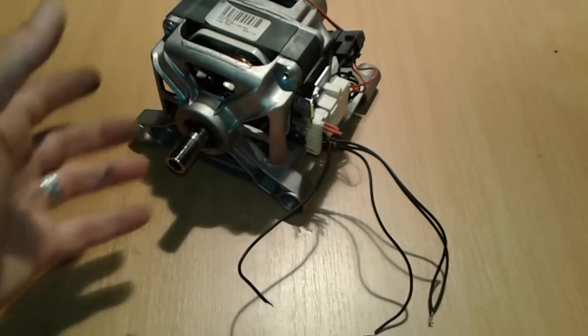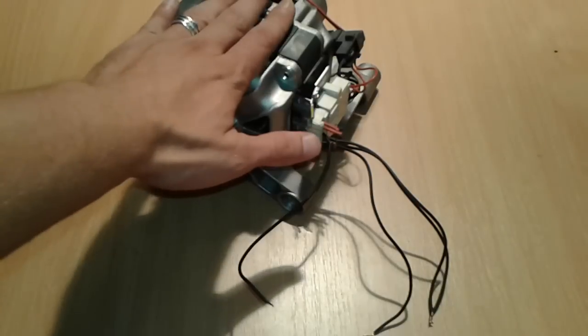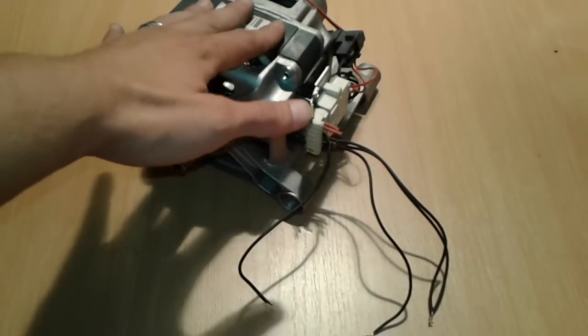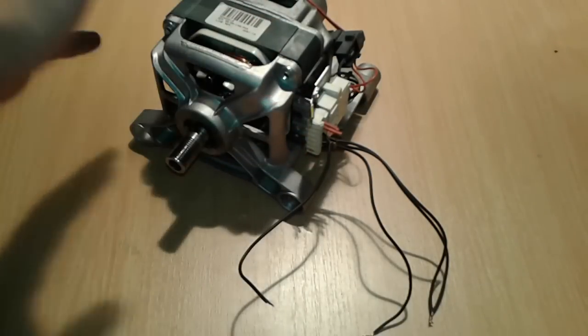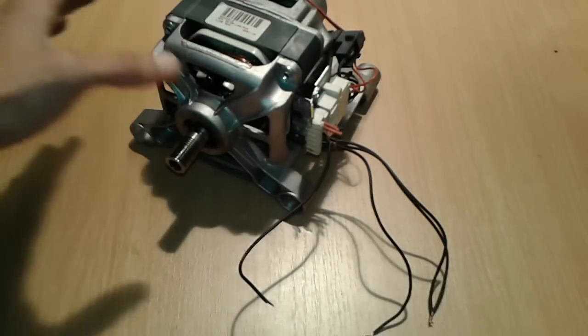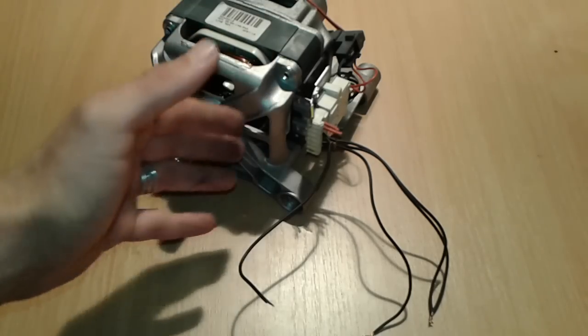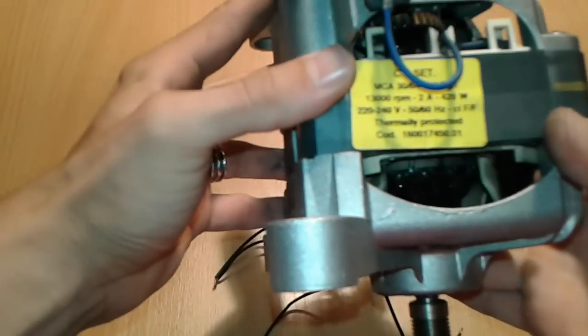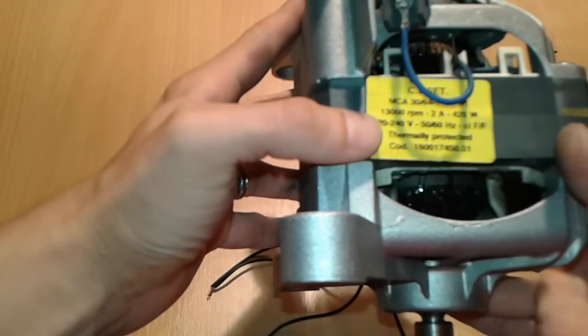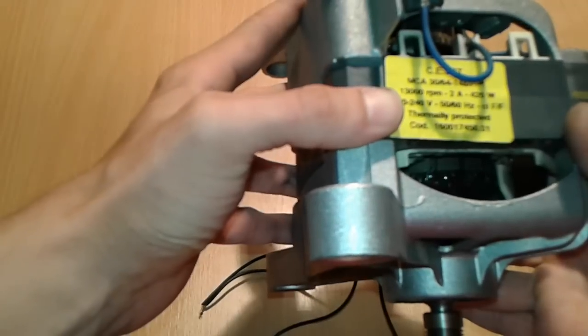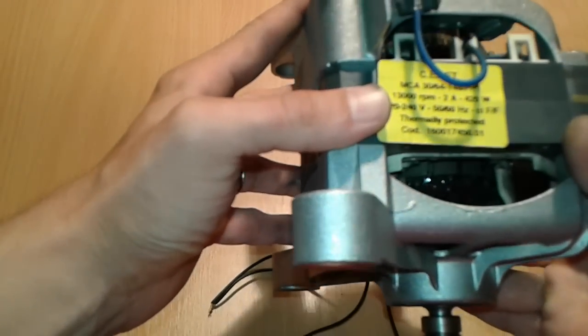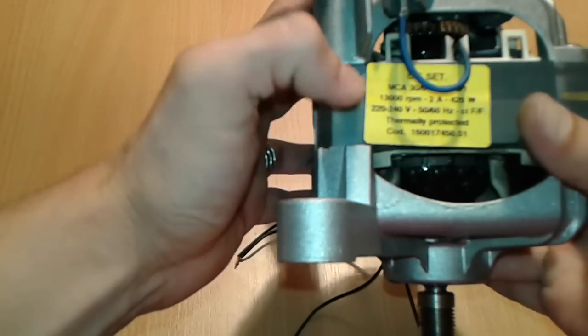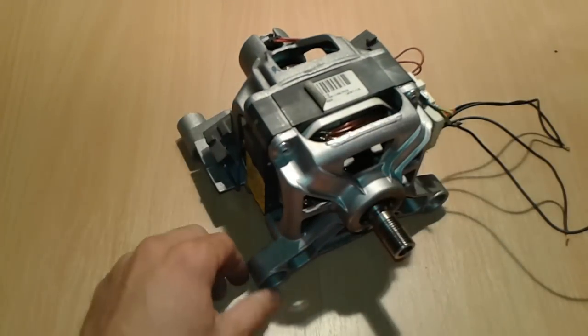You can ask now, what are this washing machine motor uses? You can use this as a generator, as an electric bike, as a go-kart, you can make a log splitter with it because it's got a very high speed. This particular model is 220 to 240 volts, 13,000 RPM, 2 amps, 420 watts, 50 to 60 hertz, thermally protected.